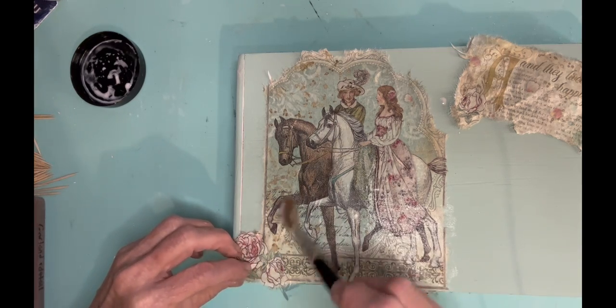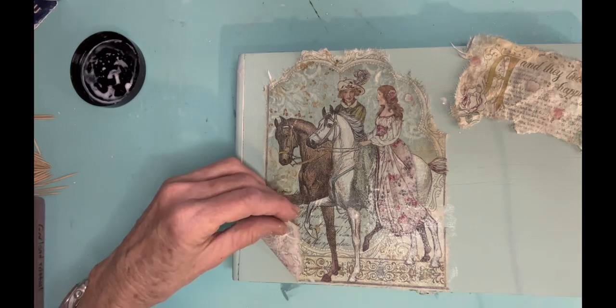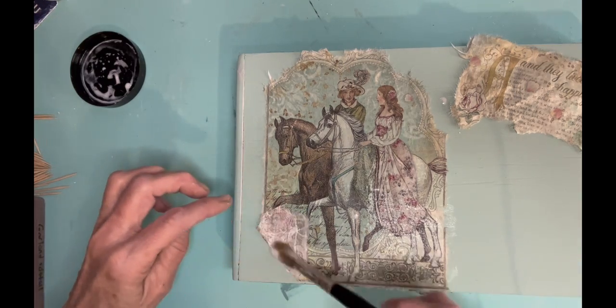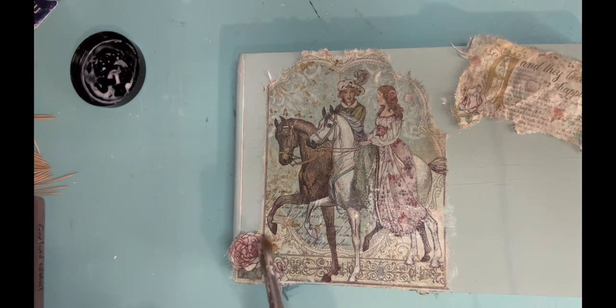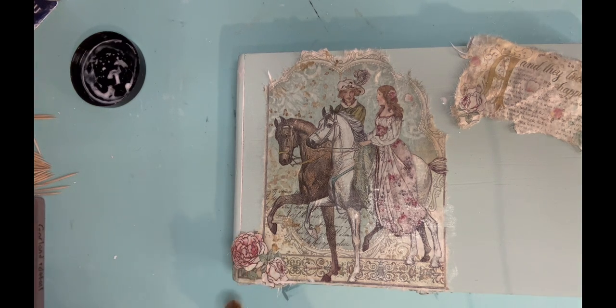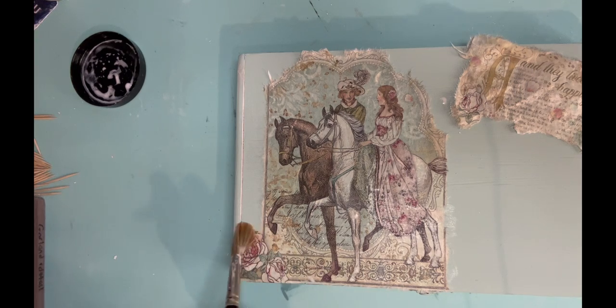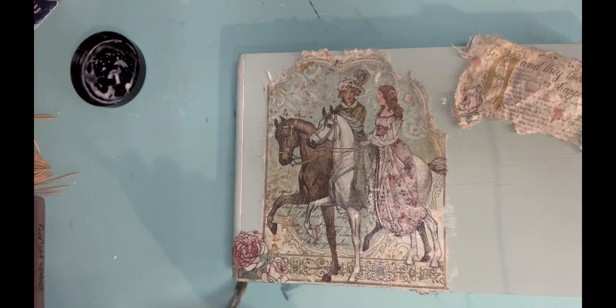In the top right hand corner is the part of the rice paper that starts with and they lived happily ever after. In the bottom right corner of the top of the box is something special that I'm going to put on at the end.